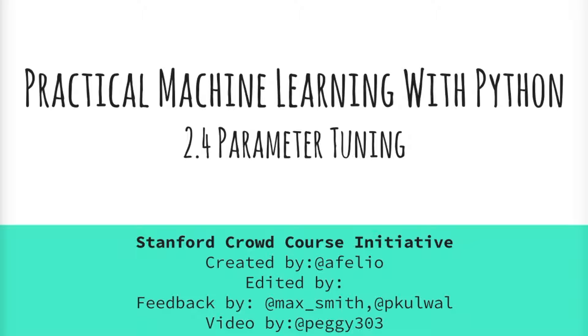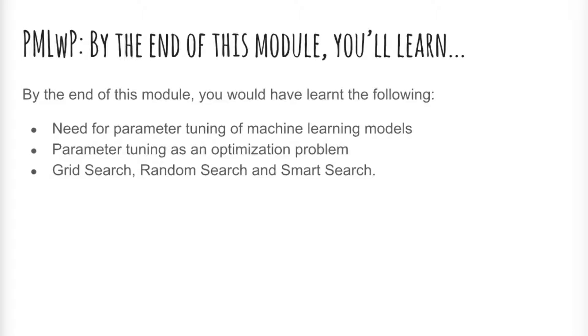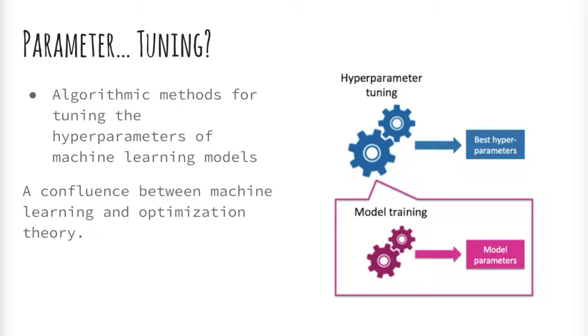Hello everyone, welcome to the course on practical machine learning with Python. This course was created by the Stanford Crowd Course Initiative. By the end of this module, we will have covered the following topics: the need for parameter tuning of machine learning models, parameter tuning as an optimization problem, and three types of searches - grid, random, and smart.